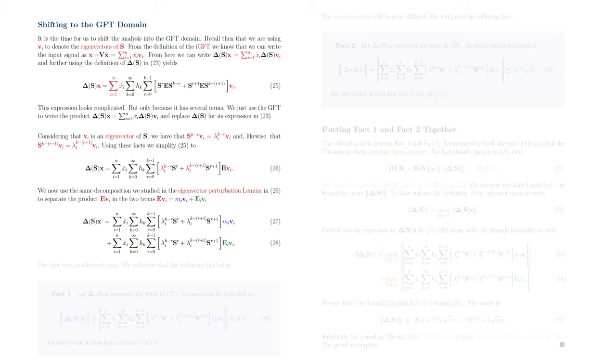In the eigenvector perturbation lemma, we have decomposed this product of E and Vi as the summation of a product between the scalar M sub i with Vi and a product between a matrix E sub i with Vi. Utilizing this decomposition in 26, we end up with the terms in 27 and 28, which are the ones we need to study to conclude the proof of the theorem.